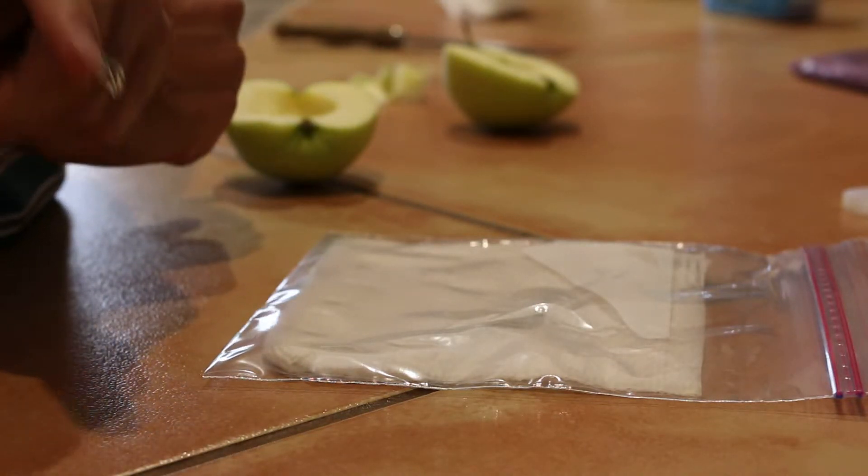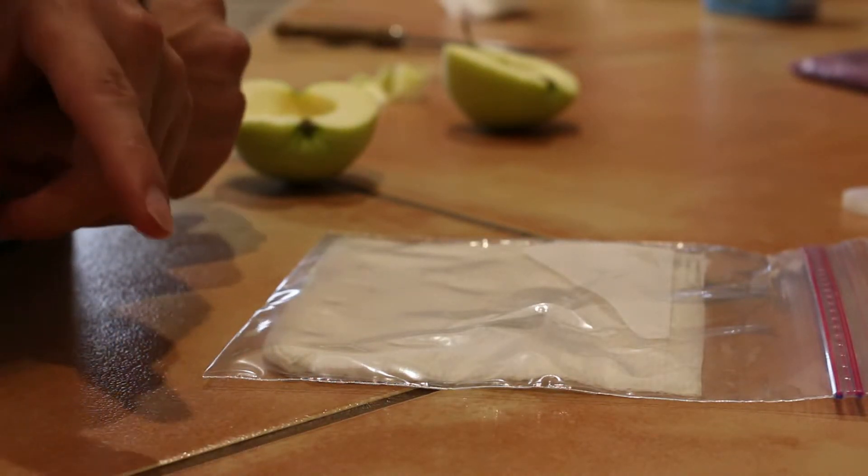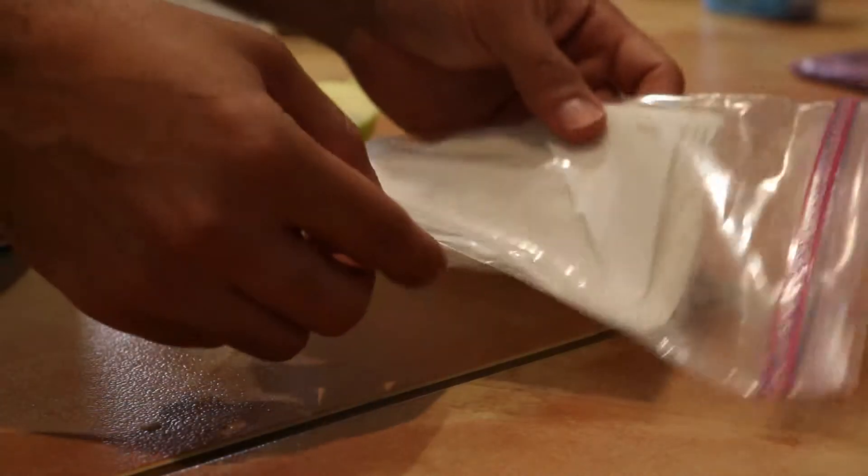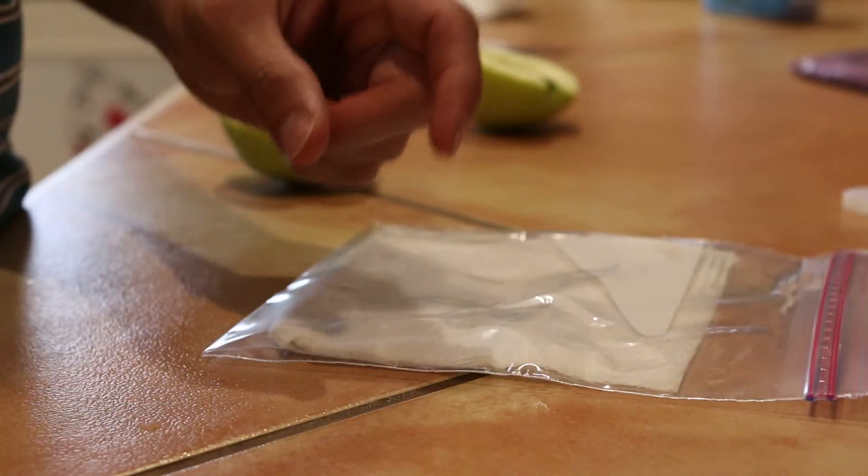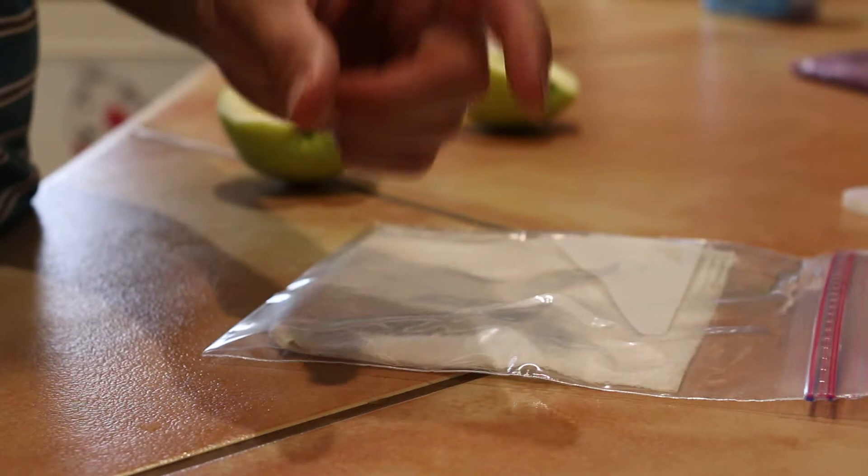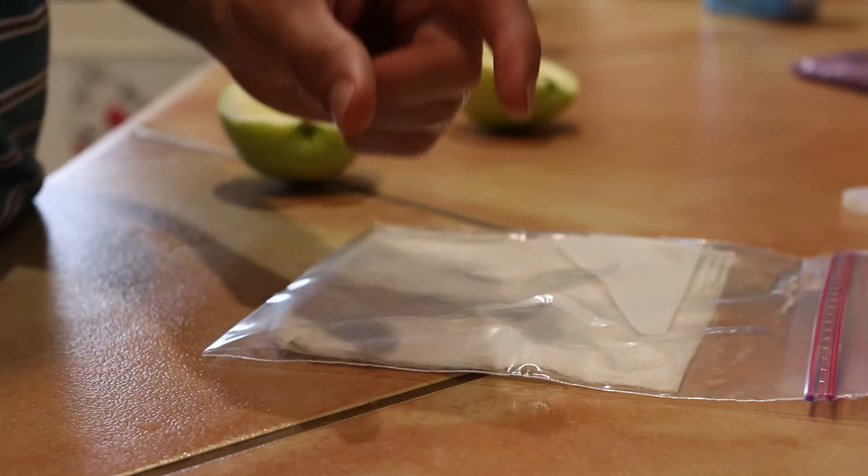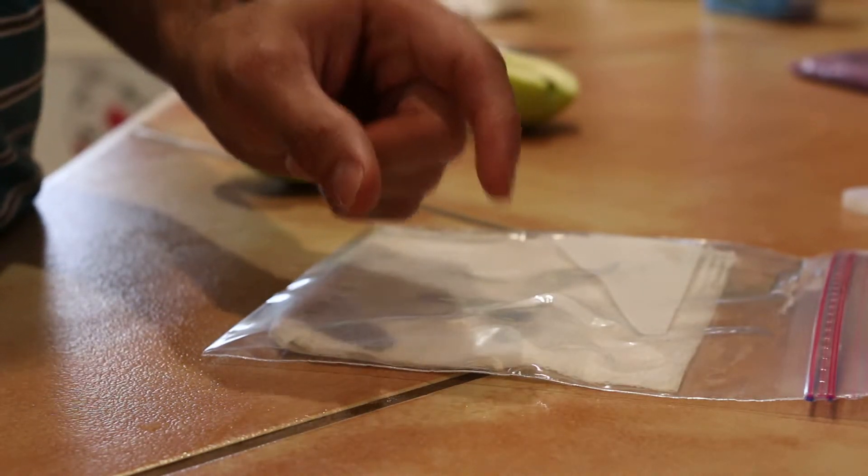Anywhere from 10 days to 40 days, you should see some germination. Once you see the seeds germinate and they get about an inch tall, you want to put them in soil.